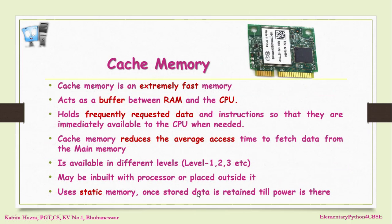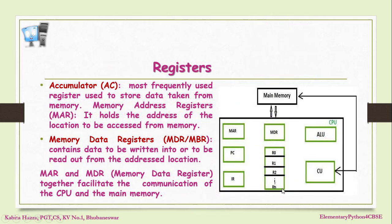The accessing of data from main memory to the processor can be made faster by using a very high-speed memory called cache memory. It acts like a buffer between the RAM and the CPU. Cache memory is used for frequently used data and instructions so that they are immediately available to the CPU when required. It helps in reducing the average access time to fetch data from the main memory. Cache memory may be available in different levels like level 1, level 2, and so on, and may be built into the processor or placed outside it. Cache memory is made up of static or semiconductor memory.